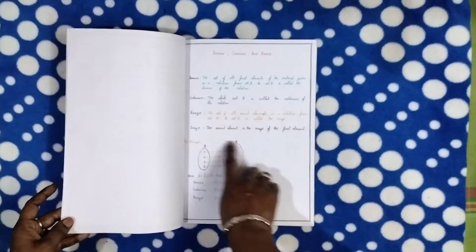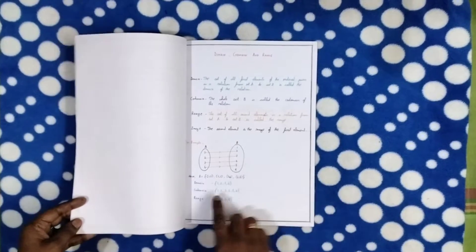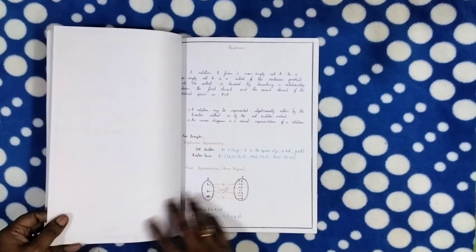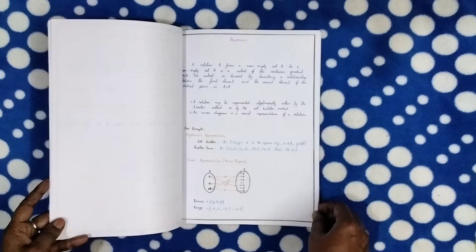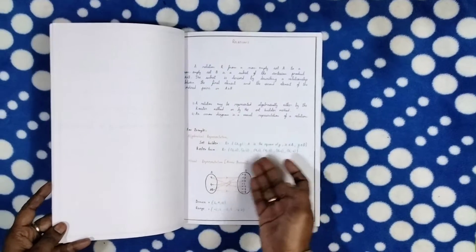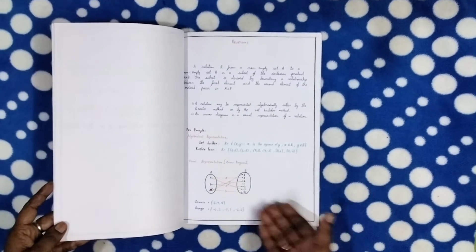He's given in set notation what is the domain, codomain, and range. Then he's come to the topic Relations - what is a relation, what is the algebraic representation.